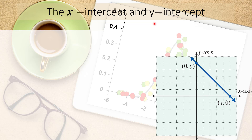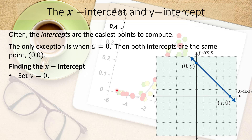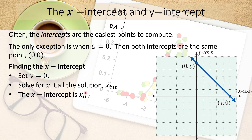The exception is when c equals zero, because then the graph goes through the origin, making the x-intercept and y-intercept the same point. To find the x-intercept, set y equal to zero and solve for x — call that value x-int. Note this is just the value, not the ordered pair. Similarly, to find the y-intercept, set x equal to zero and solve for y — call that value y-int.